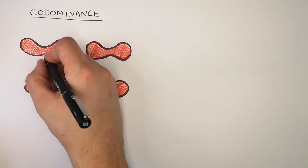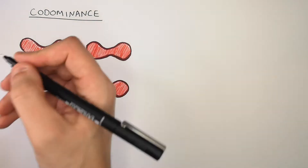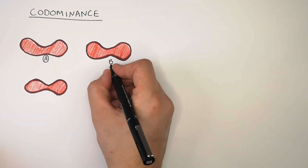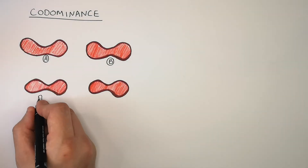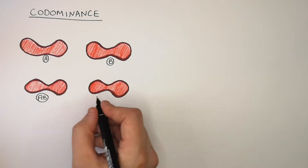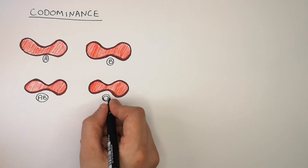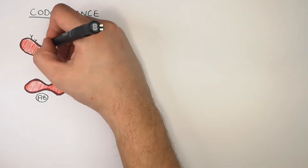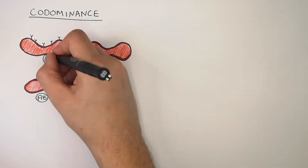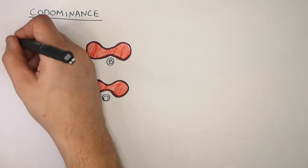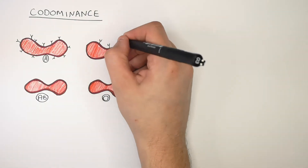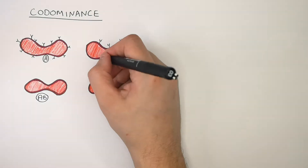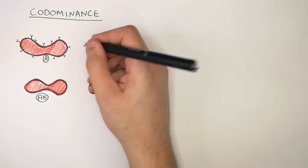There are four different blood groups: blood group A, blood group B, blood group AB, and blood group O. The different blood groups denote the different markers that exist on the cell membranes of each of the red blood cells.